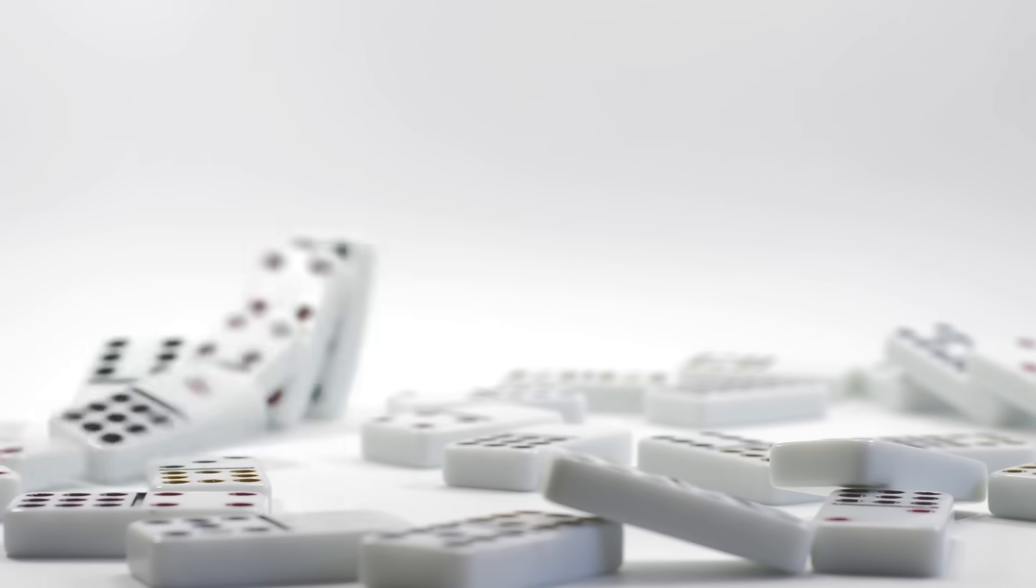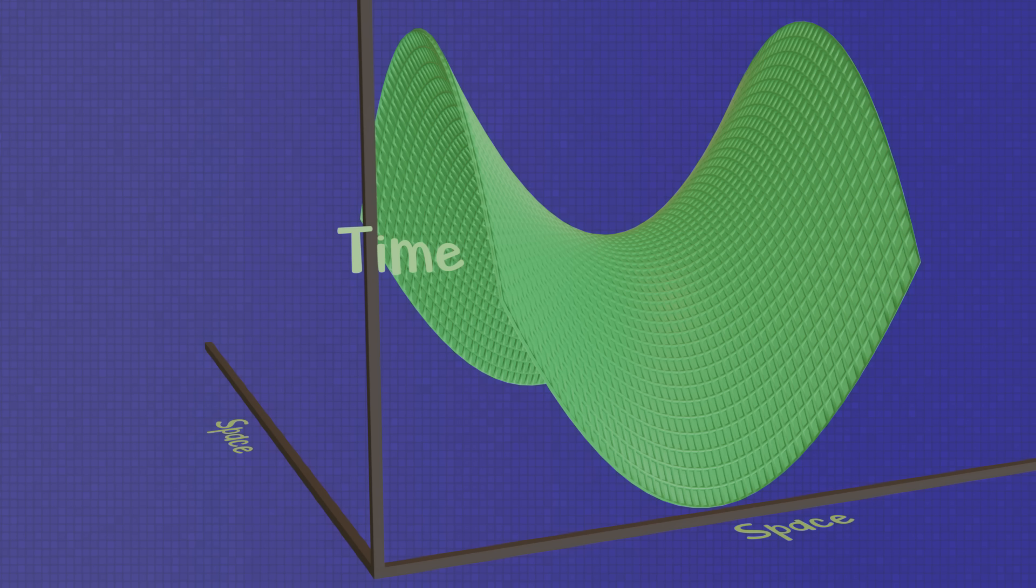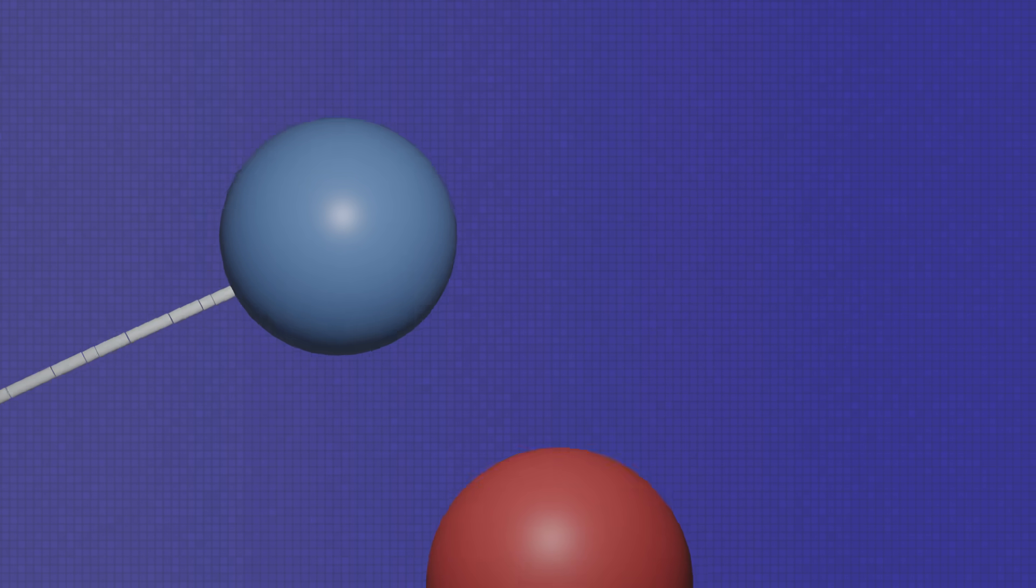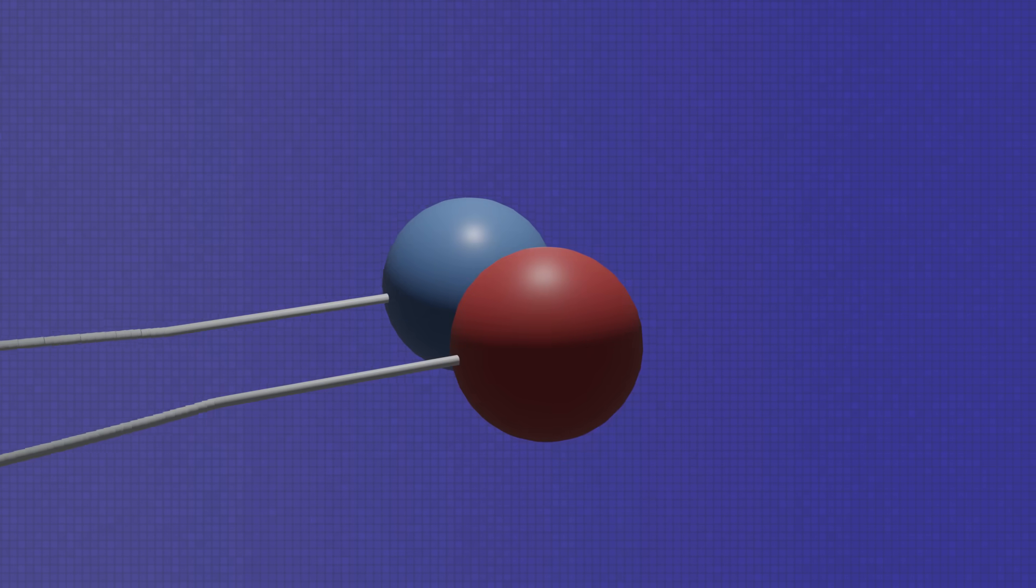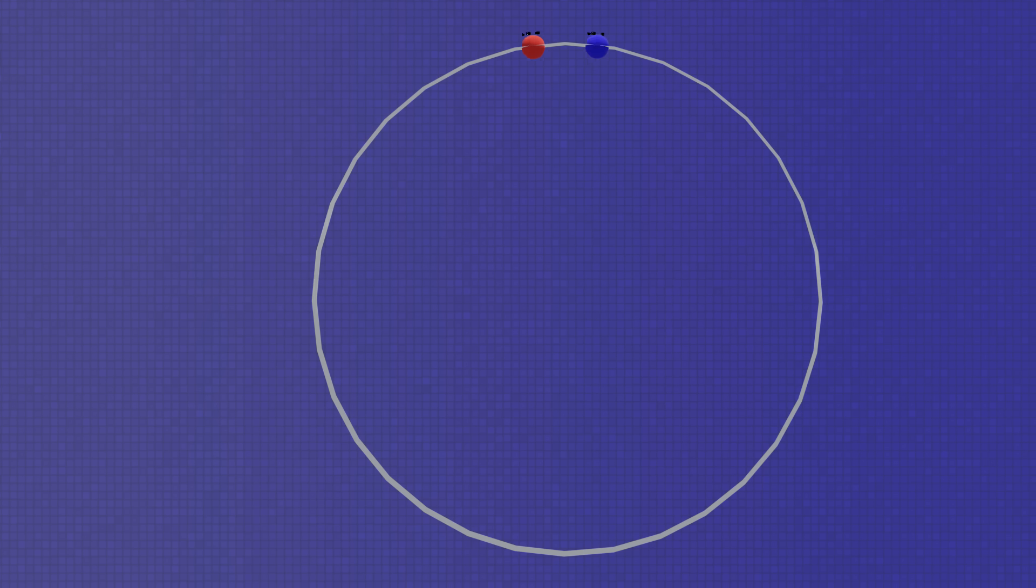But that doesn't mean we can't understand the consequences of it. This curvature in the fourth dimension is what we experience as gravity, and just like how everything in the lower dimensions that travel in straight parallel lines eventually meet up, the same thing happens here in the third dimension. However, here things differ a little from our friends before.